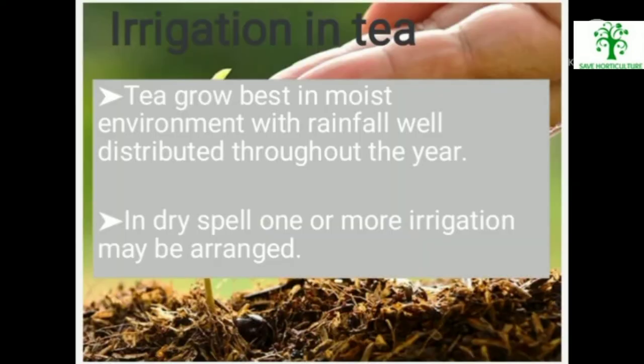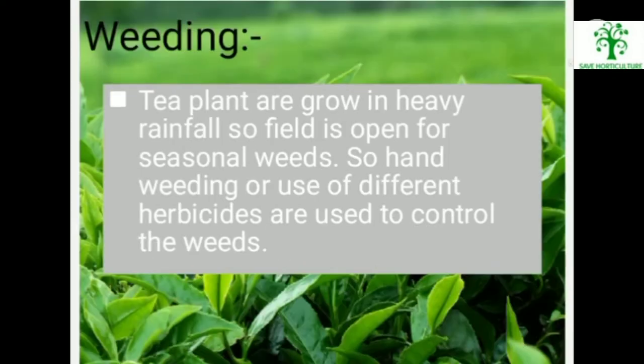Irrigation in Tea. Tea grows best in a moist environment with rainfall well distributed throughout the year. In dry spells, one or more irrigations may be arranged. Weeding: tea plants grow in heavy rainfall areas so the field is open to seasonal weeds. Hand weeding or use of different herbicides are used to control weeds in tea.